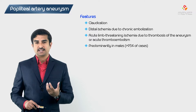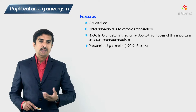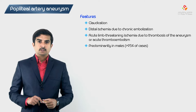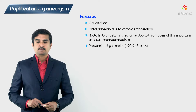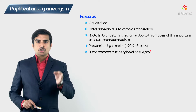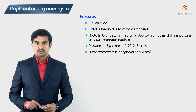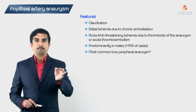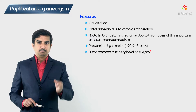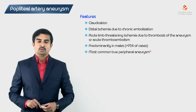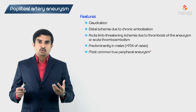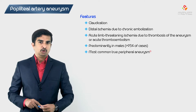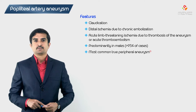Popliteal artery aneurysms predominantly occur in males — greater than 95% of cases show male gender predominance. Regarding epidemiology, the popliteal artery aneurysm is the most common true peripheral aneurysm. These are seen more commonly than femoral artery aneurysms, but less frequently than abdominal aortic aneurysms.